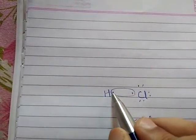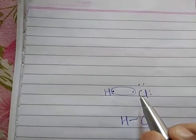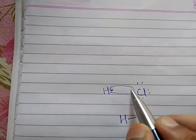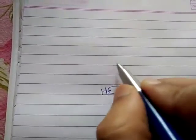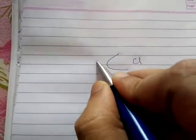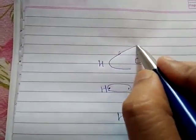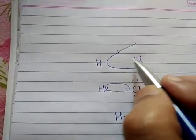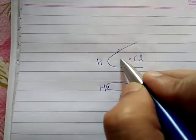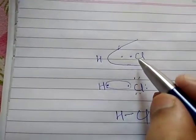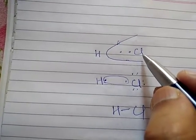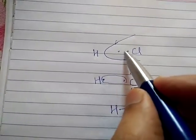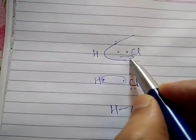These two electrons, although they have been shown to be shared by hydrogen and chlorine, in reality the electronic cloud will be more towards the chlorine atom. The shared pair of electrons will be more towards the chlorine side. So we can say that chlorine is more electronegative since it has the tendency to attract the shared pair of electrons towards itself.